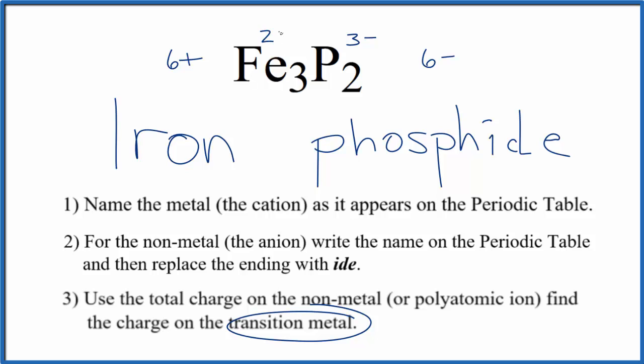Three times two plus, that'll give us six plus. So for iron, we're going to put parentheses with the Roman numeral two between these two names here.